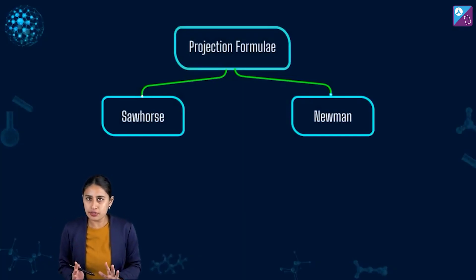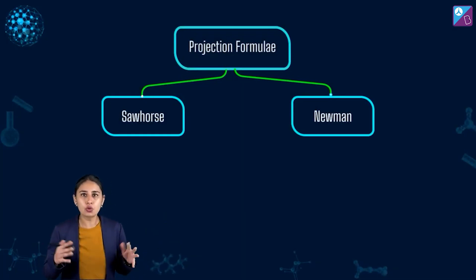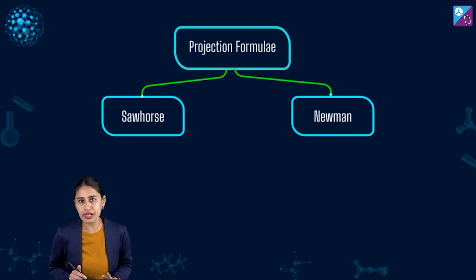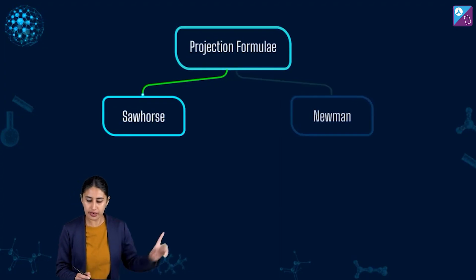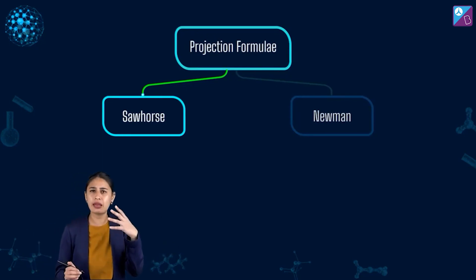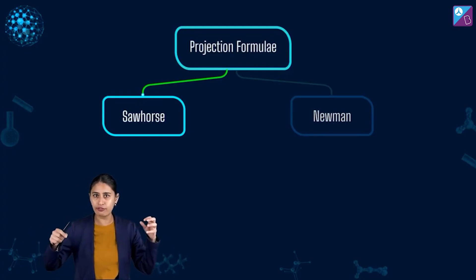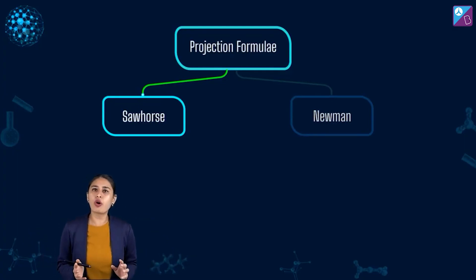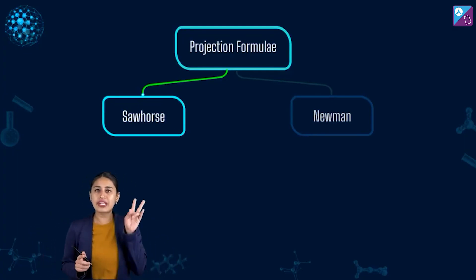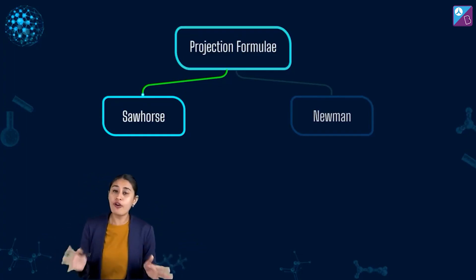Let's take the journey of conformational isomerism ahead and talk about the two types: the sawhorse and the Newman projection that we need to know to understand conformational isomerism. There can be condensed formula, expanded formula, bond line formula, but when we are talking about conformational isomerism, we can have two projections — sawhorse and Newman. Very important.